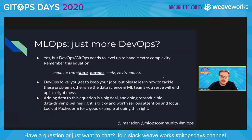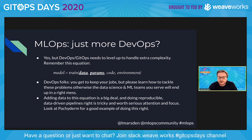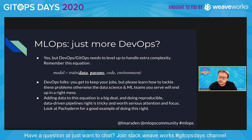My answer to 'is MLOps just more DevOps?' is yes — but DevOps and GitOps teams are going to have to level up to handle this extra complexity. Otherwise the data science and ML teams you serve will end up in a right mess. It's important to think carefully about how you add data to this equation. I always point to Pachyderm, an open source data pipelining tool, as a good example of doing this right — take a look at the Pachyderm data model for how to version and track provenance for the data side of this equation.